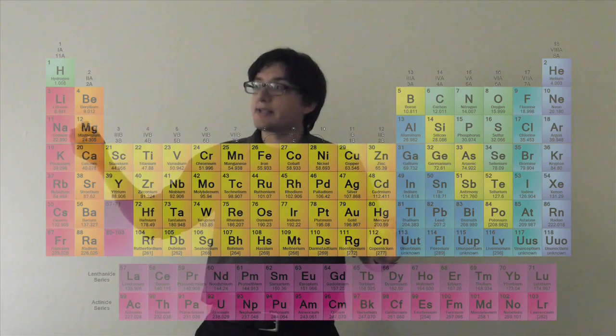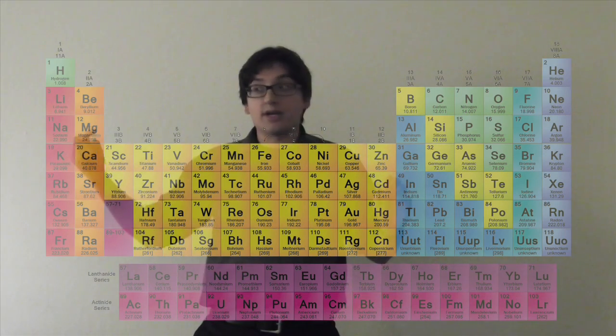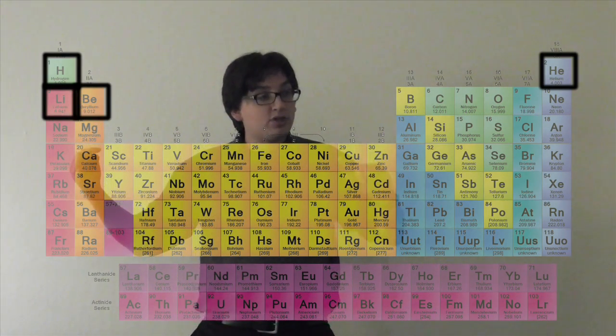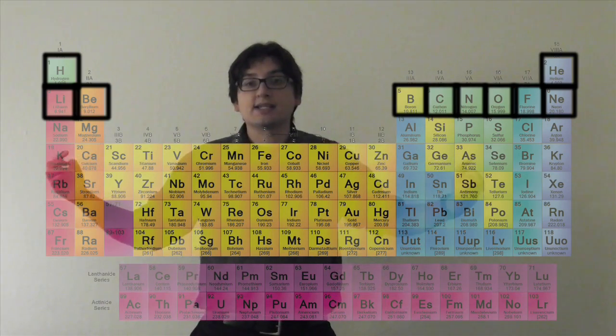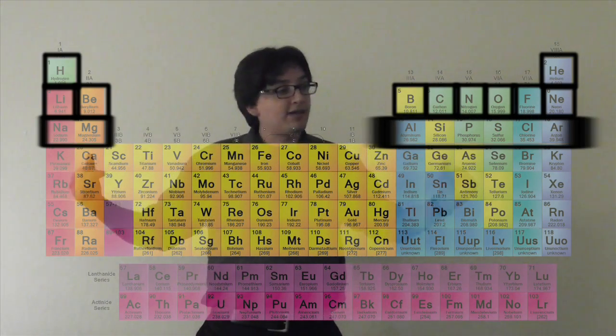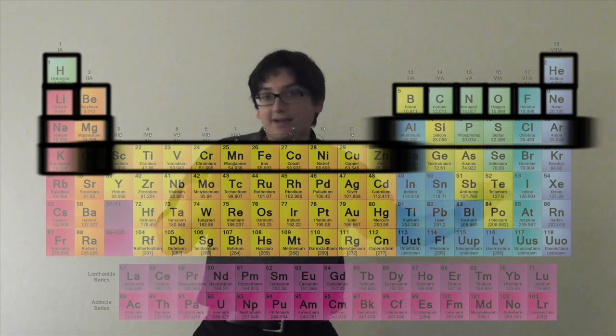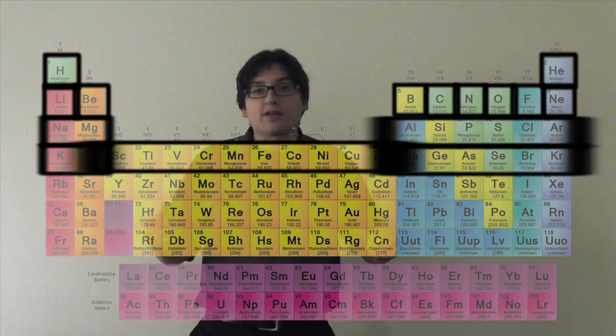So if I start adding electrons, I go 1s 1, 2, 2s 1, 2, 2p 1, 2, 3, 4, 5, 6, 3s, 3p, 4s, and then you go 3d, and then back to 4p, and so on and so forth.